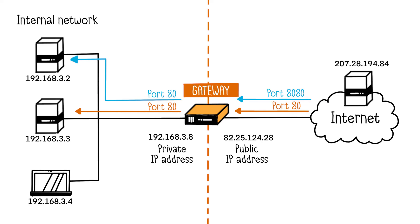To access the second server from the external network, the external machine needs to connect to the public address of the gateway on port 8080. The gateway will translate this address to the internal address, but will also change the port from 8080 to 80 for the server hosting the requested service.